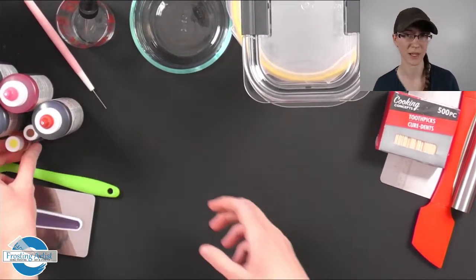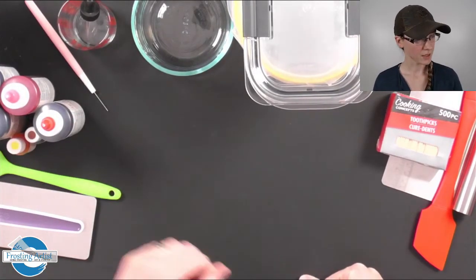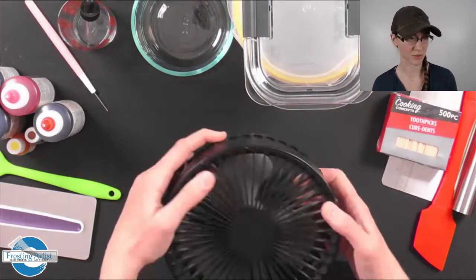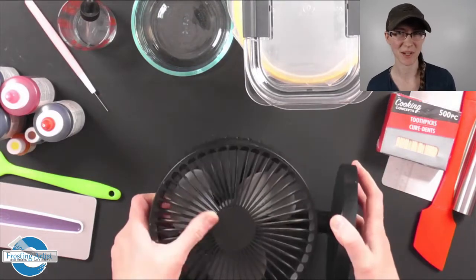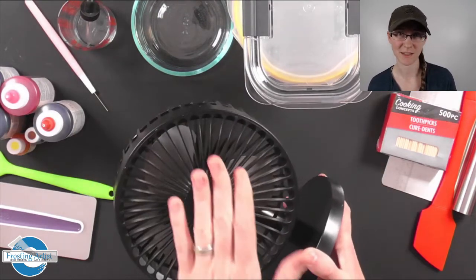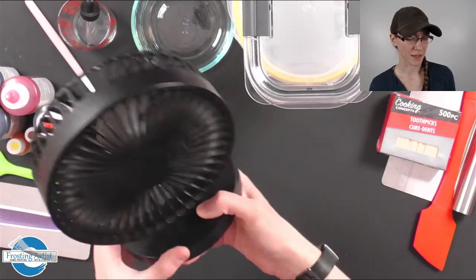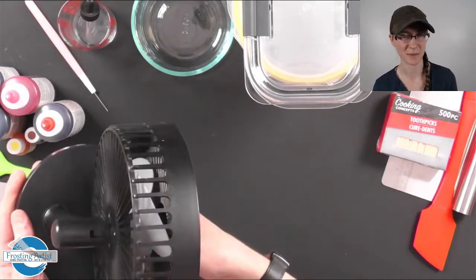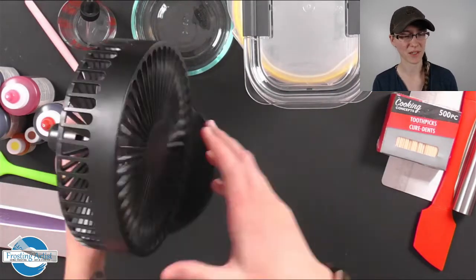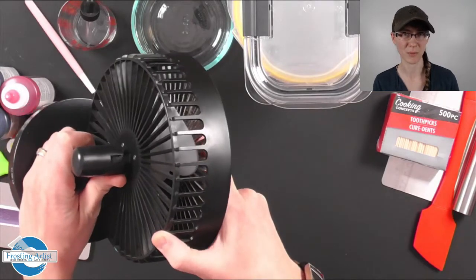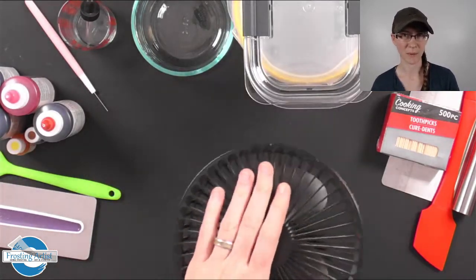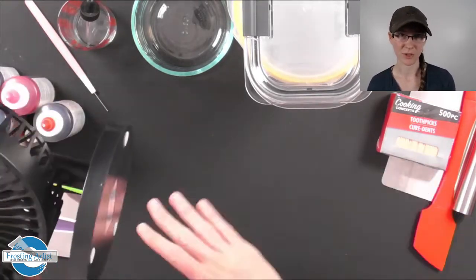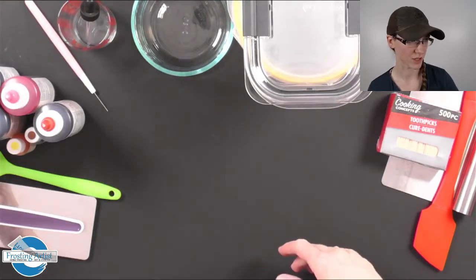The last thing that you will want to have—it is not 100% necessary, you do not have to have one of these—but it does make your dry time a lot quicker is a desktop fan. So this one does not tilt downwards. I do have to prop this up on something, so if you do buy one make sure you find one that you can tilt down towards your table. And all you do is whenever you frost a layer you're just going to turn this fan on and just let it blow onto your icing and it cuts your drying time down quite a bit.